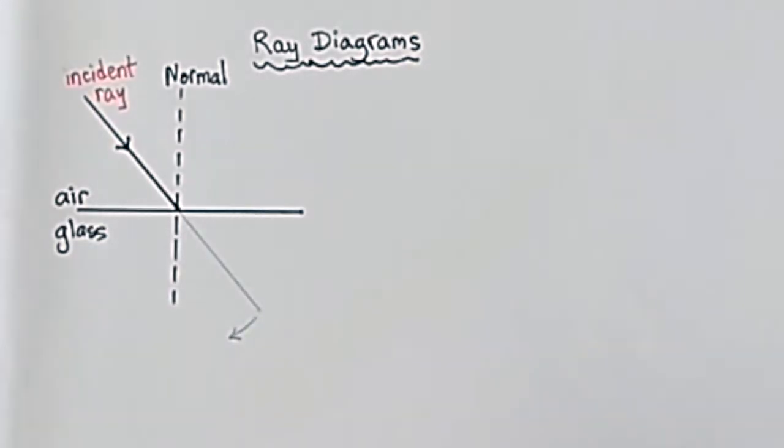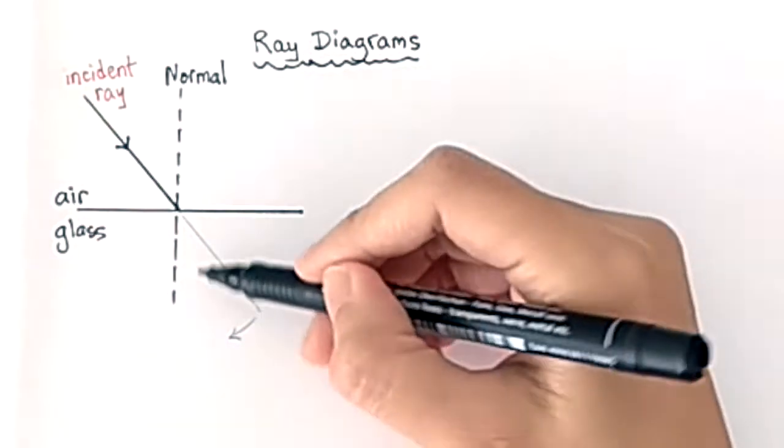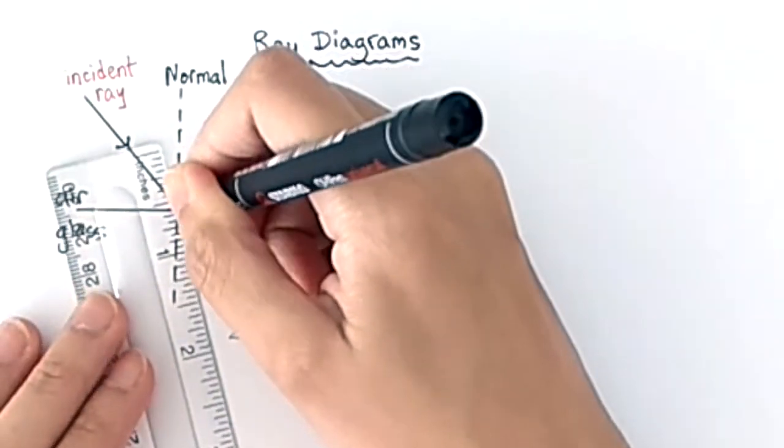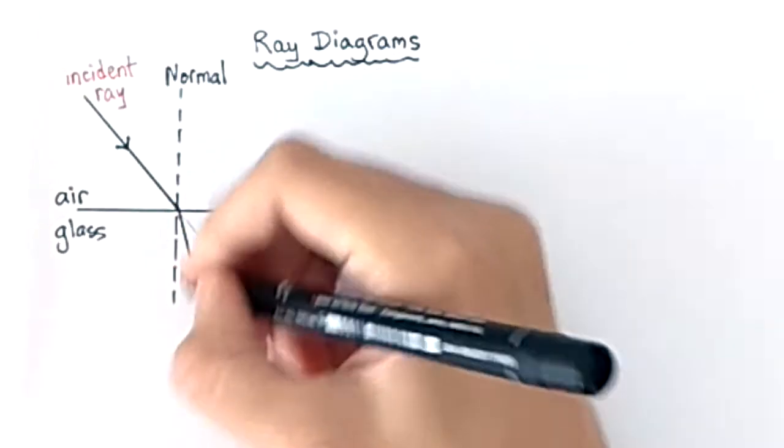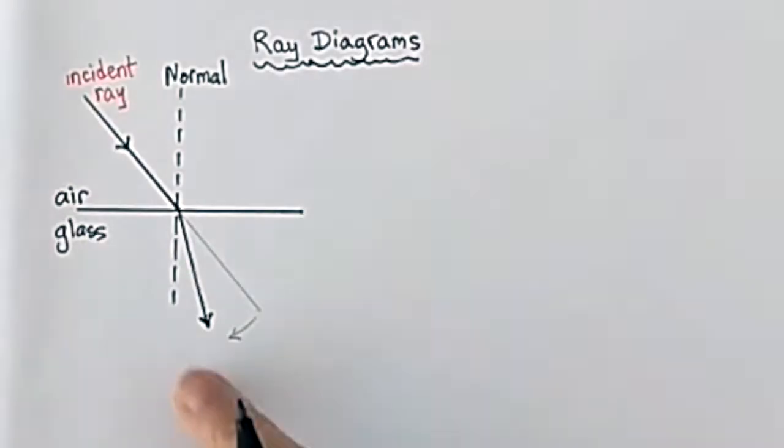My refracted ray is going to be closer to the normal. So I know that my refracted ray must be drawn in between the dotted line and the pencil line. This is my refracted ray.